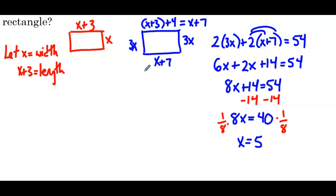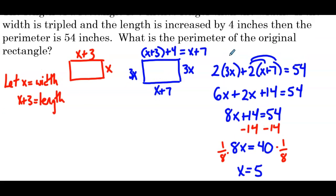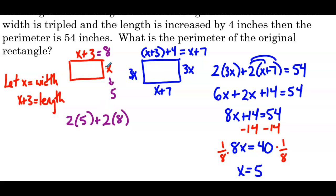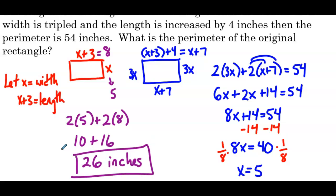We used the blue rectangle and all the information about it to find x equals 5. Now we take that value to answer the original question: what is the perimeter of the original rectangle? The width is 5, so the length is 5 plus 3 equals 8. Two sides of length 5 plus two sides of length 8: that's 10 plus 16, giving a perimeter of 26 inches for the original rectangle. This is a good example where we have to separate the information within the word problem, break it into smaller pieces, and use those pieces to complete the problem.